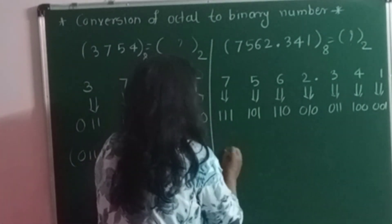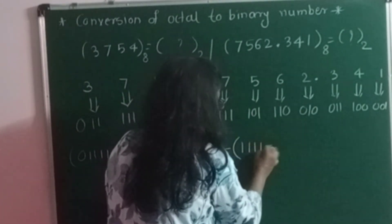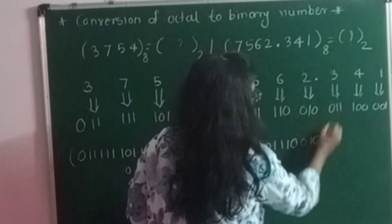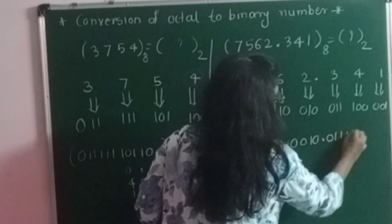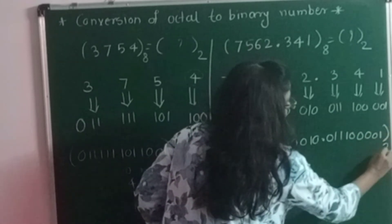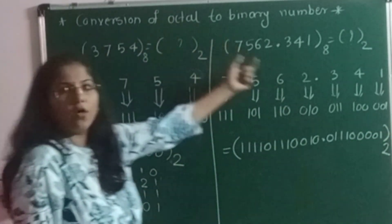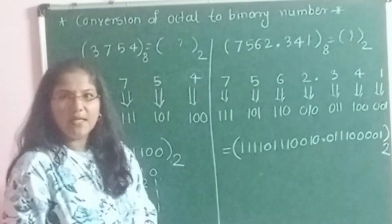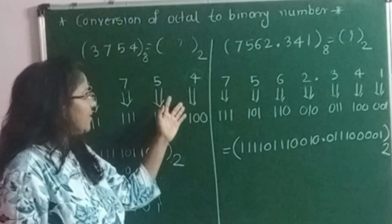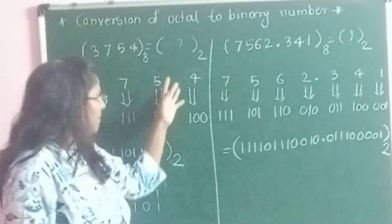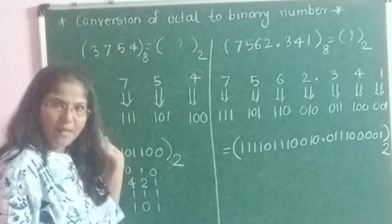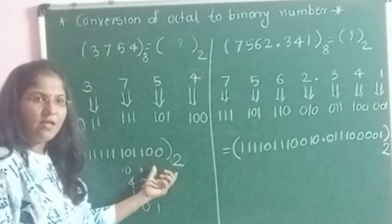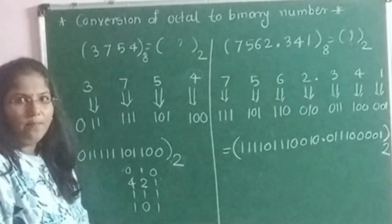Now writing the final equivalent binary number: 1,1,1 — 1,0,1 — 1,1,0 — 0,1,0 point 0,1,1 — 1,0,0 — 0,0,1. This is the equivalent binary number for the given octal number. Simply write all the digits keeping some space, write the equivalent 3-bit binary below each digit, then combine all those binary numbers together — that is the equivalent binary number for the given octal number.